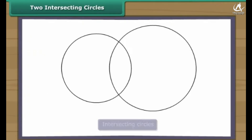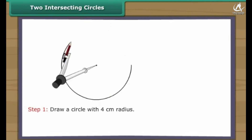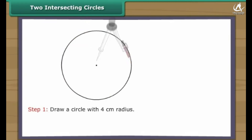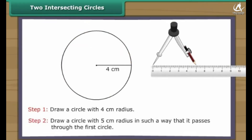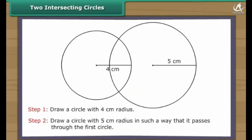Two intersecting circles. Intersecting circles may or may not have the same radii. Let us now draw intersecting circles. Draw a circle with four centimeters radius. Draw a circle with five centimeters radius in such a way that it passes through the first circle. We have two intersecting circles.